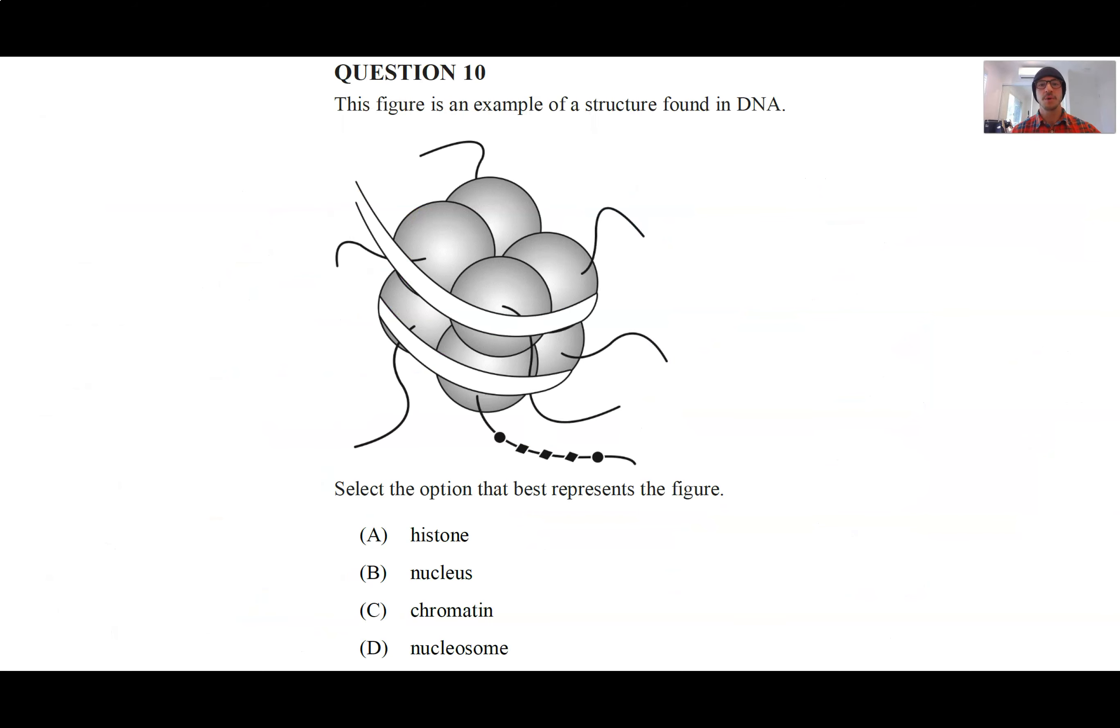So let's get into some questions now. This is taken from QCAA and it is a multiple choice. The figure is an example of a structure found in DNA. What is it called? So pause the video here and answer that one. Okay, I hope you've come up with your response. Let's talk it through.